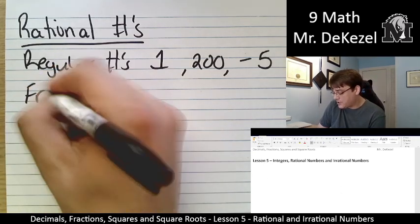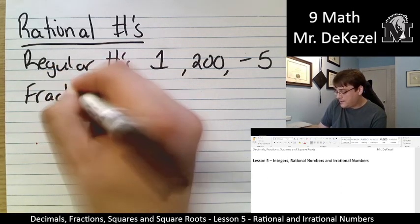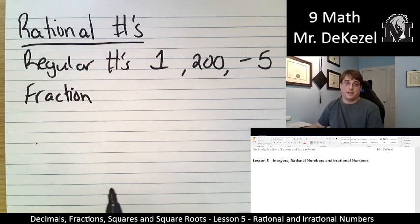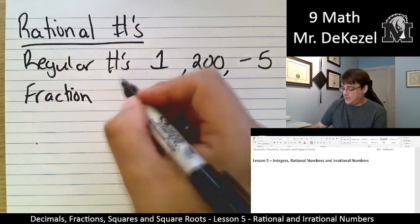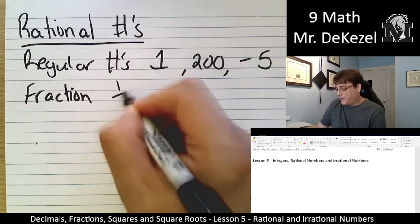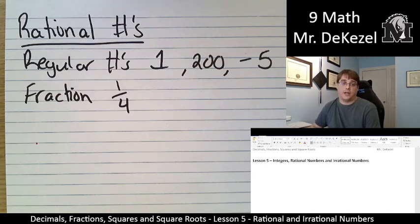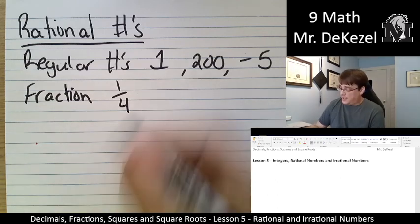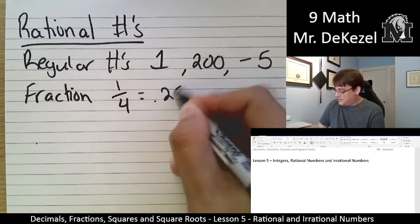Another example of any rational number is a fraction that can easily be turned into a decimal. An example would be 1 out of 4, right? 1 quarter, as we know, that is the same as 0.25.